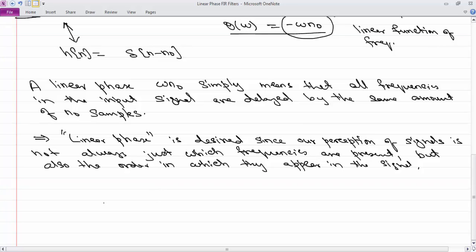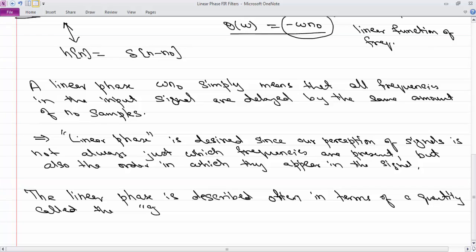So now it's not always possible to have a perfect linear phase, so how do people determine how close you are to the linear phase? It is measured through what's called the group delay. So the linear phase is described often in terms of a quantity called the group delay.